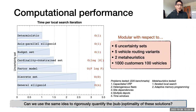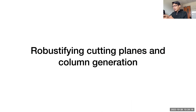So far I haven't spoken about any exact algorithms — there's no branch price and cut, this is all heuristic. This motivates us to ask: can we use the same idea to rigorously obtain lower bounds and quantify the suboptimality of these solutions? That brings us to the part of the talk that's in the title: branch price and cut.